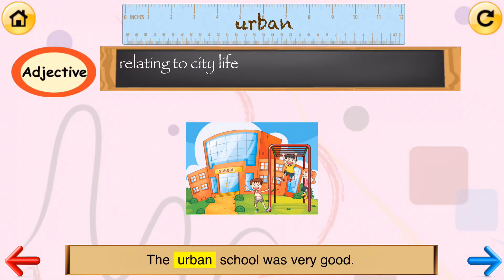Urban. Urban means relating to city life. Urban is an adjective. An example of urban is: the urban school was very good.